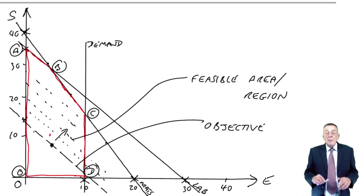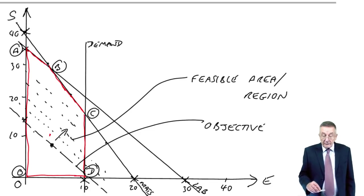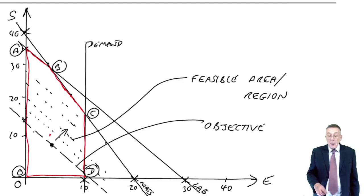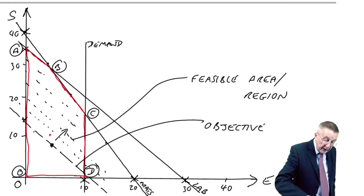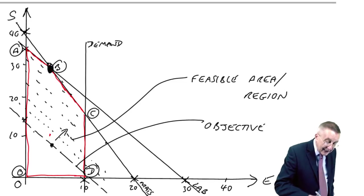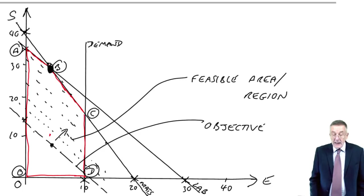But keeping it parallel to that first line and see how far away we can go without leaving the feasible area. And if you carry on moving it out, keeping it parallel, the furthest point away without leaving the area is point B.